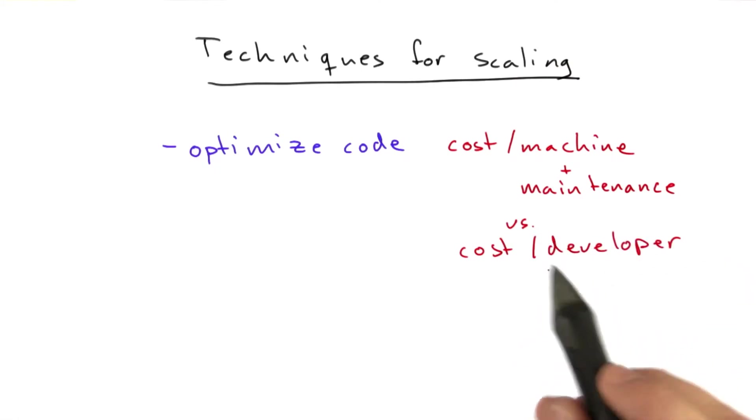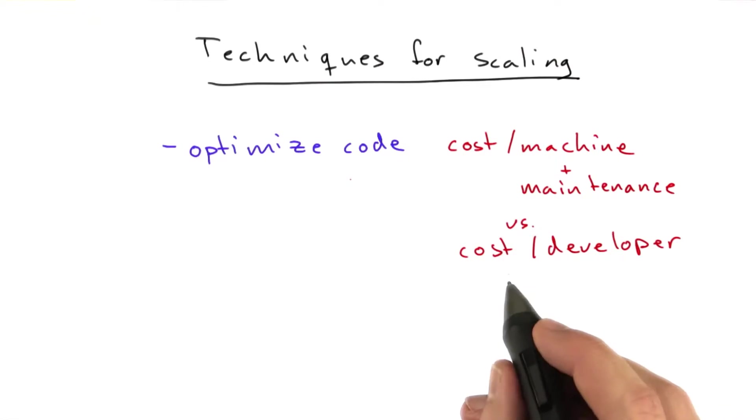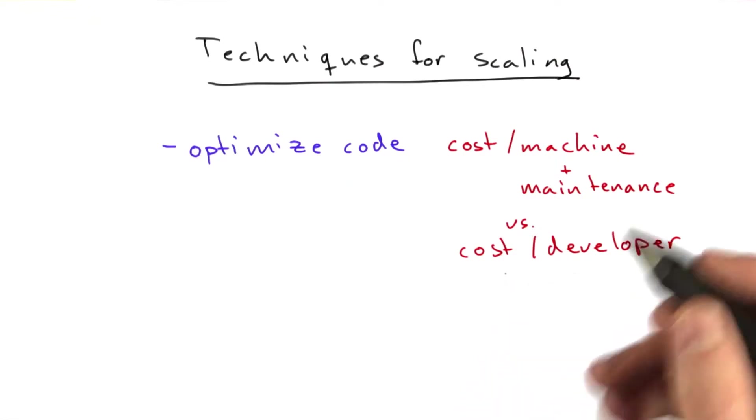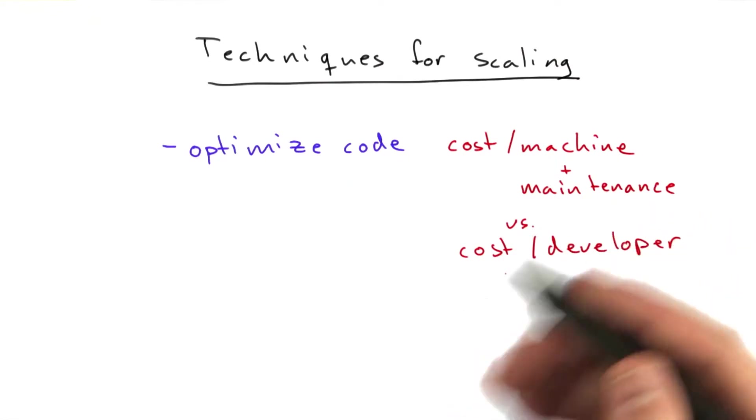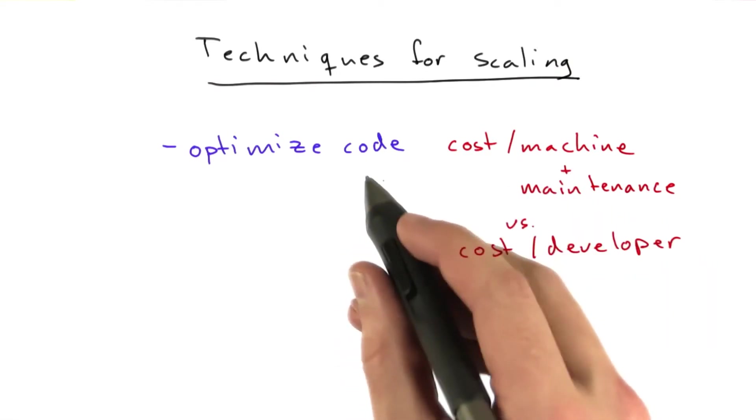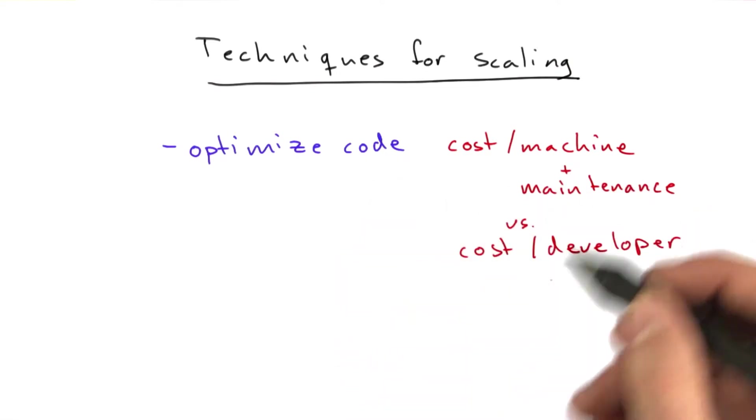That is, development time. It takes some effort to optimize your code, and paying people to do that or considering the value of your own time for optimizing code versus adding another machine, there's a trade-off there, and that's something you should think about.